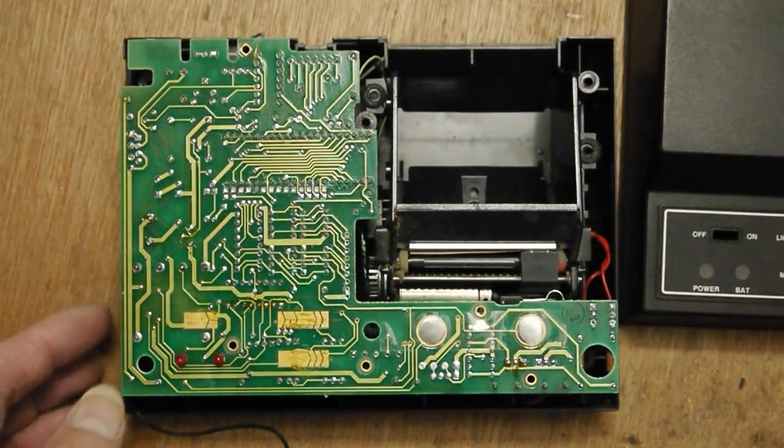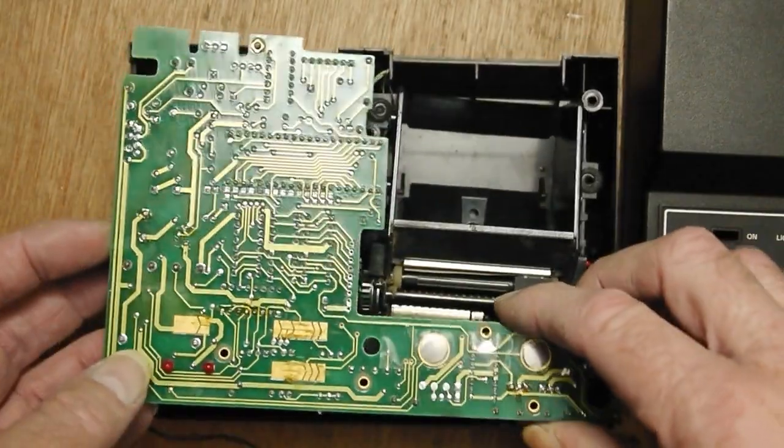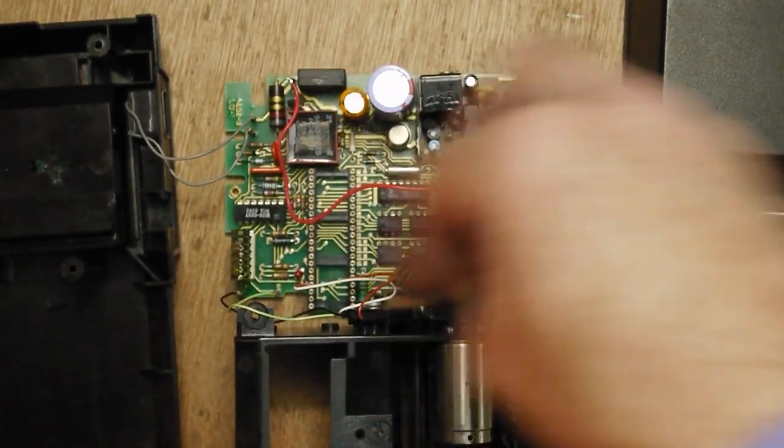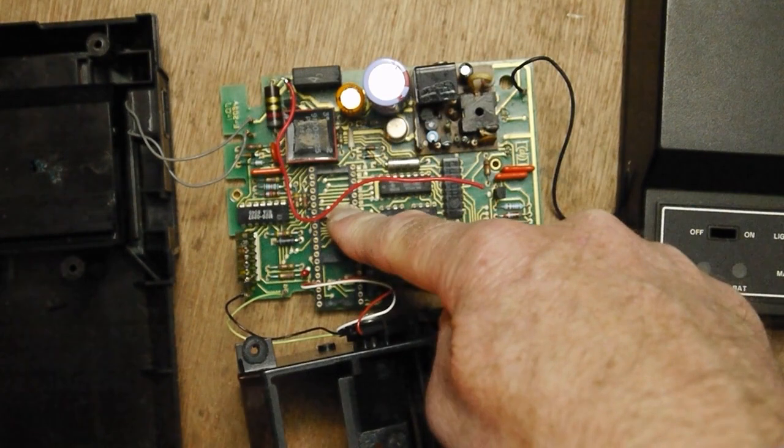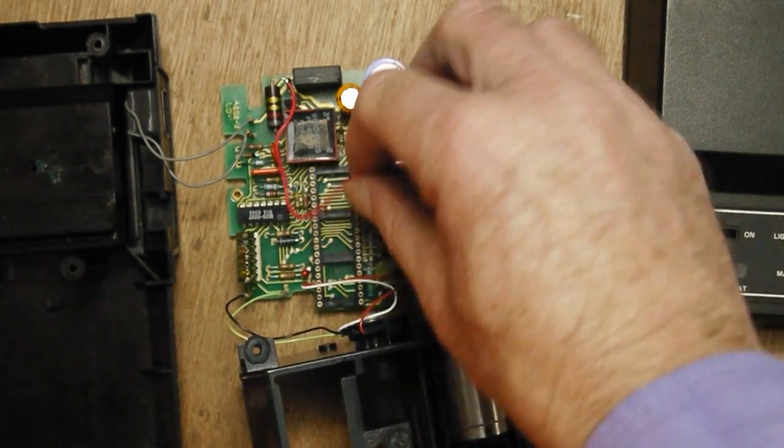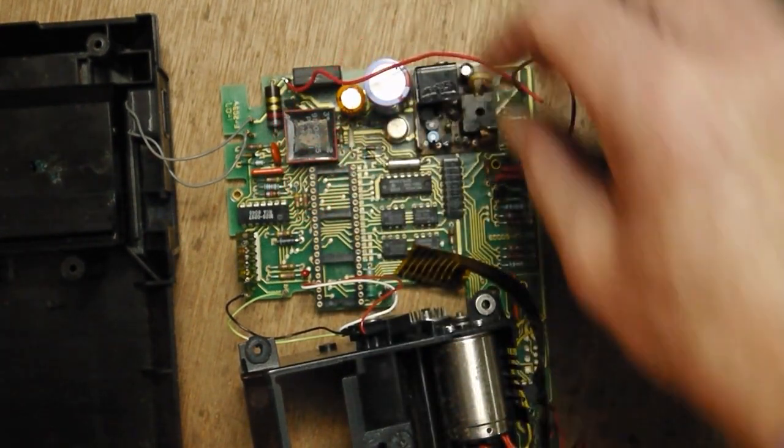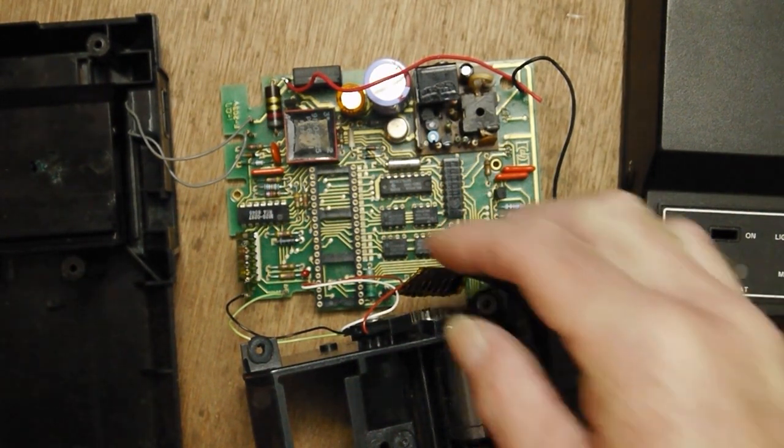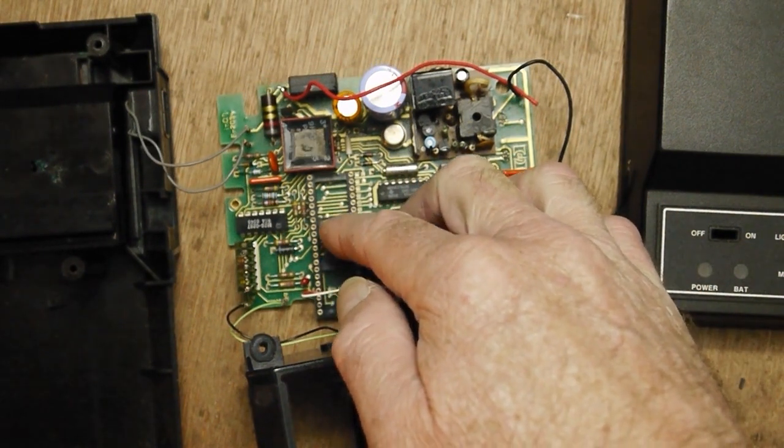This has already been taken apart. If I flip the board over, you can see you've got a printer mechanism here and then some electronics. This socket used to have an IC in it, a microcontroller. It's an M3870 by Mostek, and it's got a mask ROM in there. And that is what operates this printer.